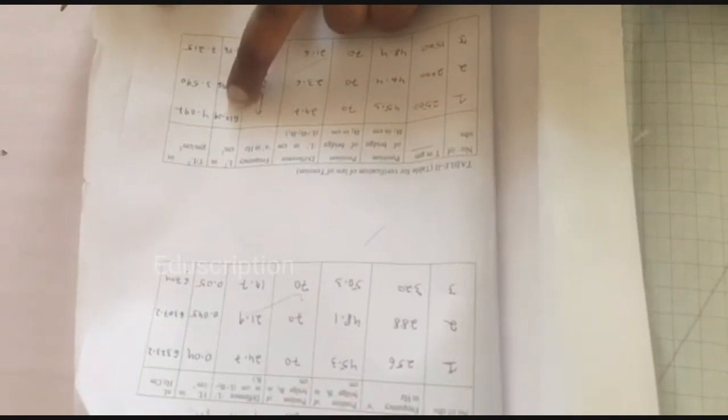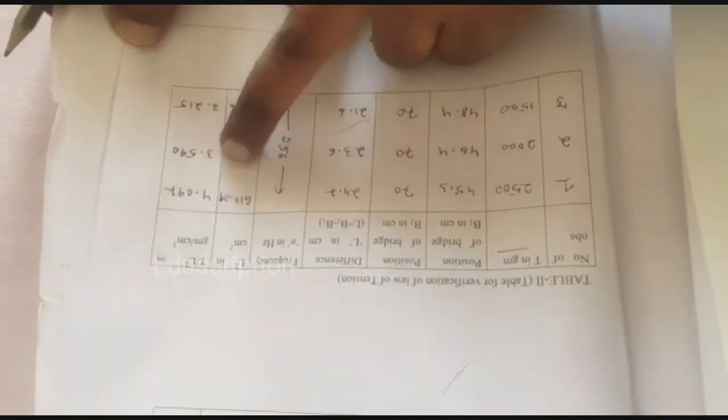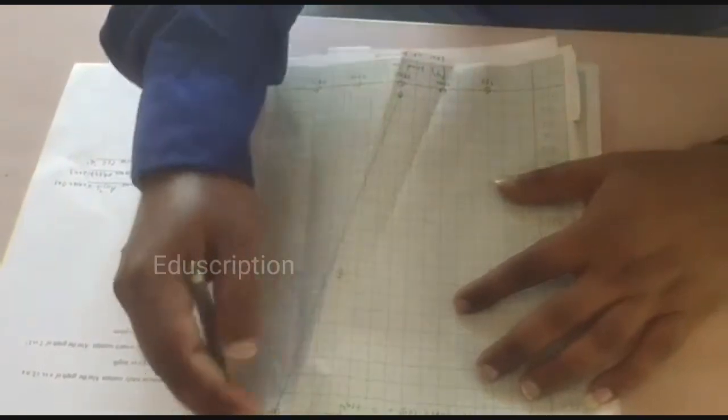That is 466.56, 610.09, these values. And see here graph also straight line.